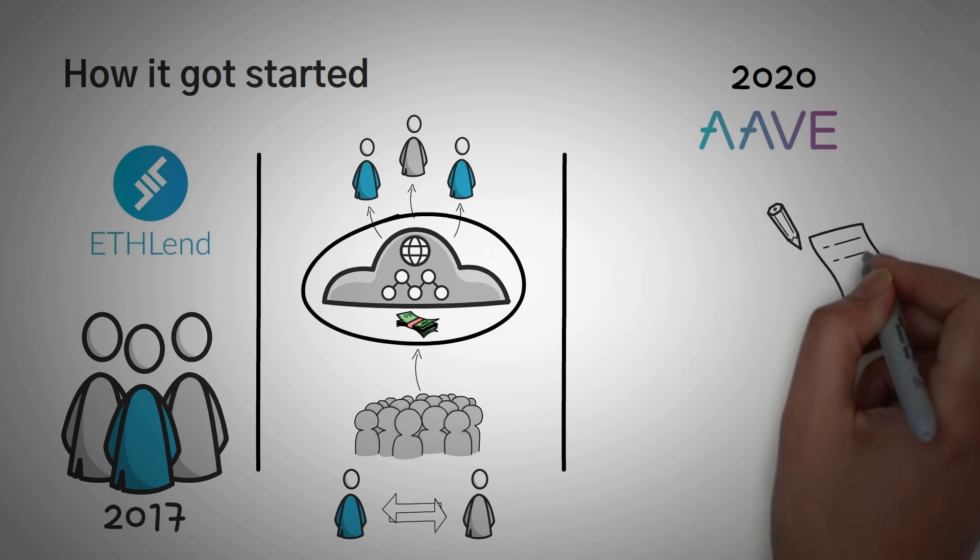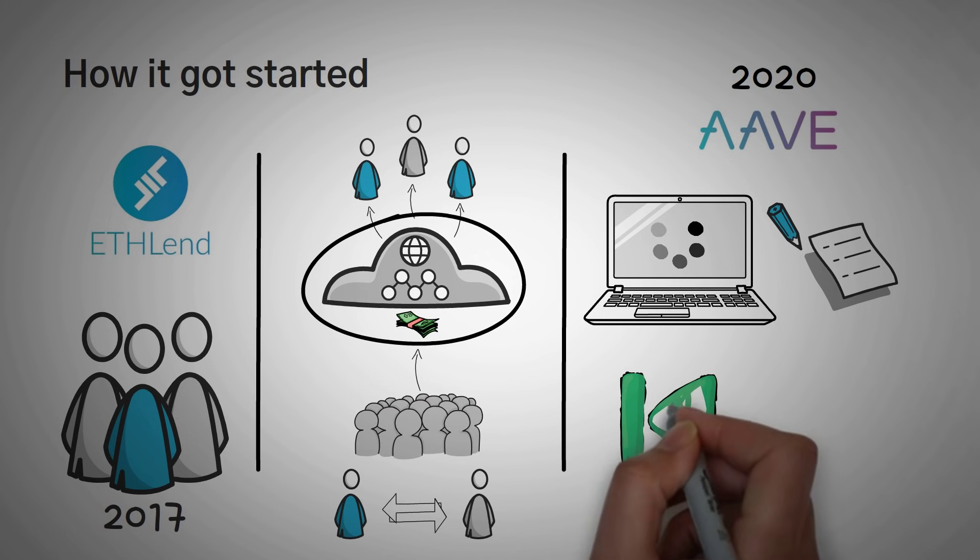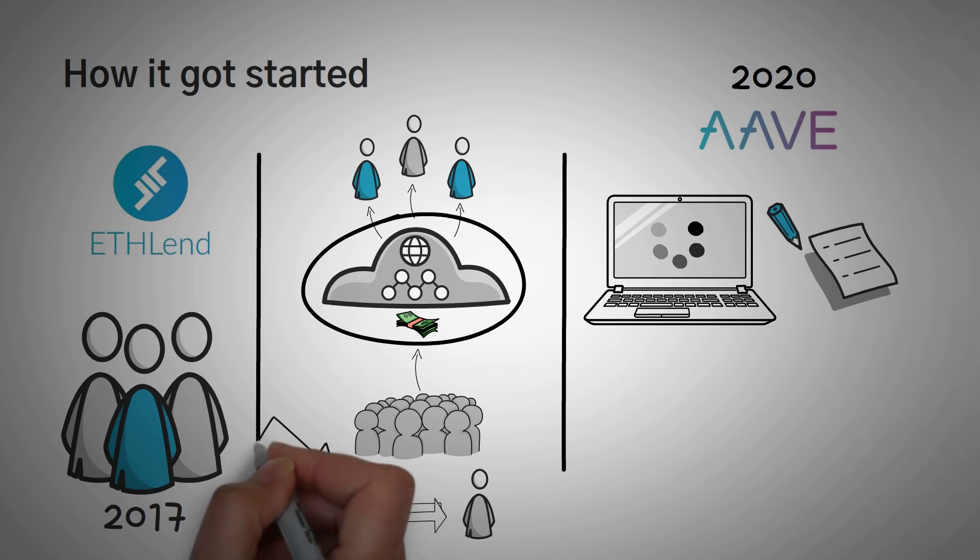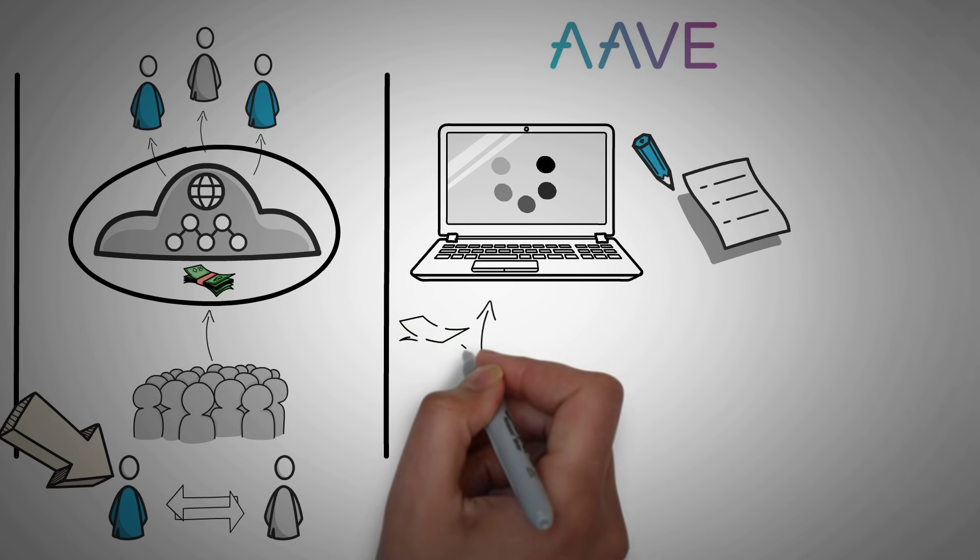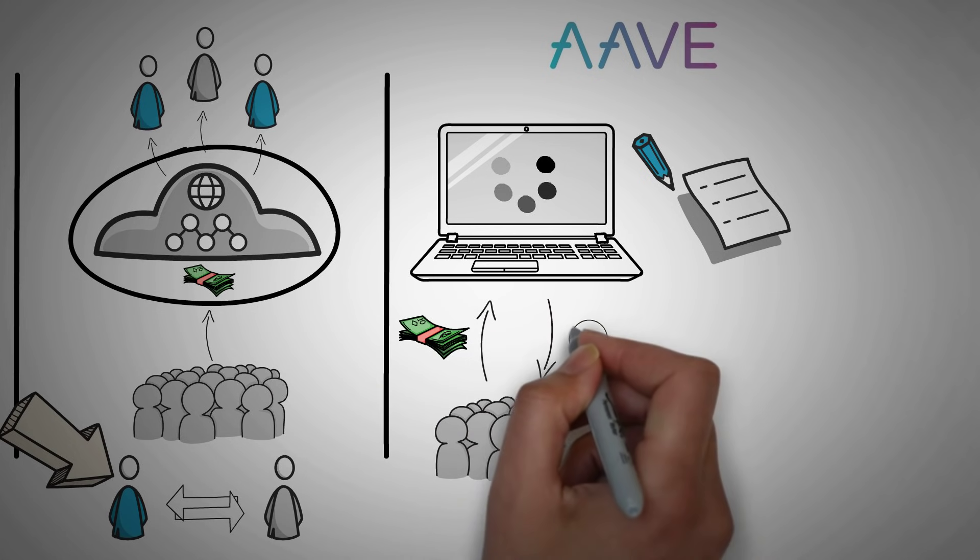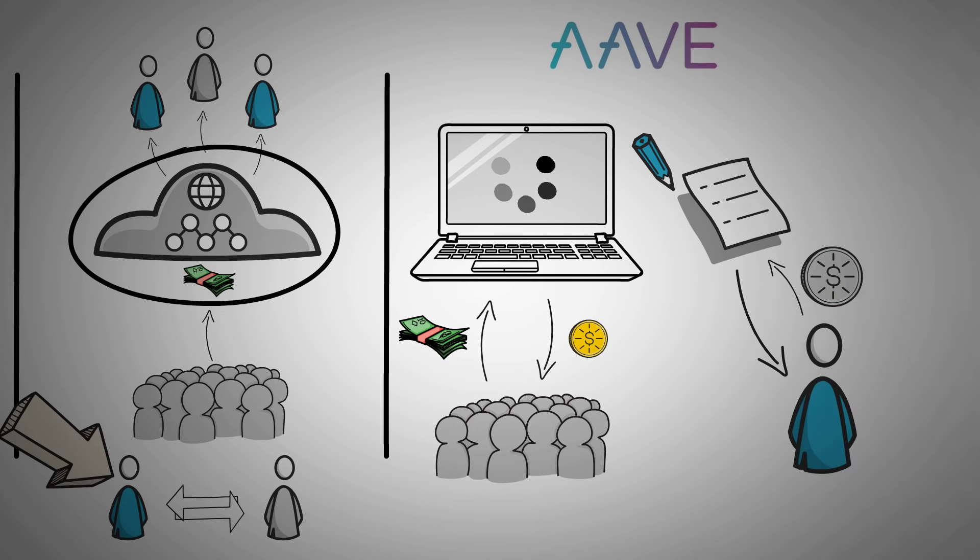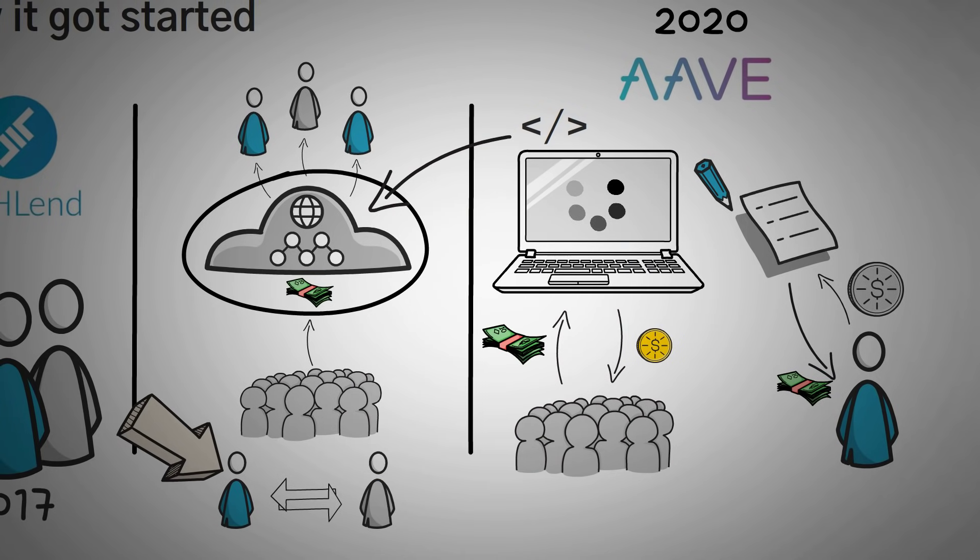Aave utilizes smart contracts, which are just pieces of code that get run automatically based on certain conditions to run the platform. Now if you're new to smart contracts, you should definitely go watch our video on it, where we break it down really simply using stories and analogies. Back to Aave. This time, instead of using peer-to-peer lending, where a borrower had to match with a lender, Aave used a peer-to-a-smart contract method. So lenders could deposit money into a smart contract and earn interest, and also, borrowers could deposit their collateral into another smart contract and borrow from any smart contract they wanted to borrow from. They used new algorithms in the smart contracts to determine the loan rates based on how much liquidity was in each smart contract.